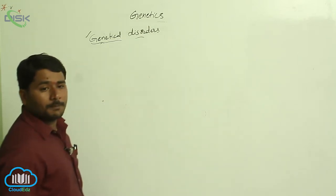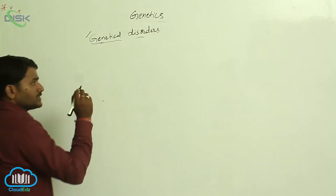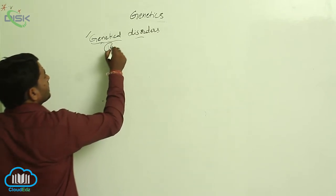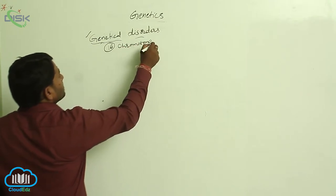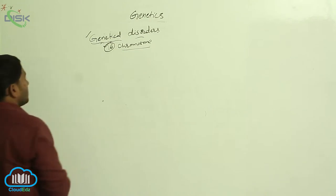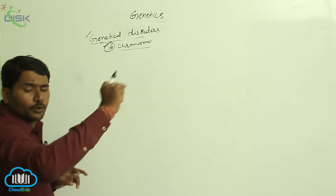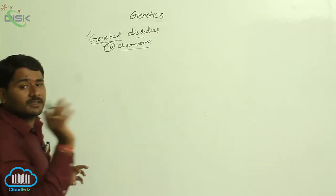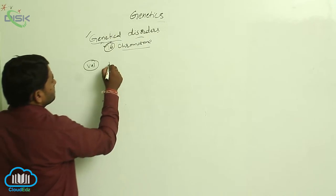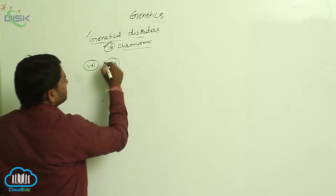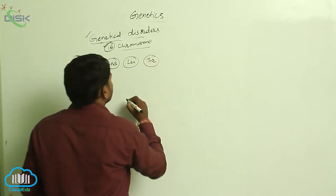If you take the beta polypeptide chain of hemoglobin, its production is under the control of a gene located on the 16th chromosome. If you look at the amino acid sequences on the beta polypeptide chain, the sequence is: valine, histidine, leucine, threonine, proline.